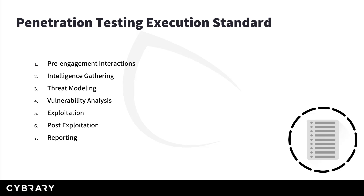Phase five is Exploitation. This is when you try to breach the security of the target on the system using the vulnerabilities that you previously identified and validated. The next phase is Post-Exploitation. So after breaching the system, you often look for ways to maintain control of the system for further exploitation and ongoing intelligence gathering. And finally, we have the Reporting, where you document your entire process in an understandable manner for the client. So these are the seven phases according to the PTES methodology.